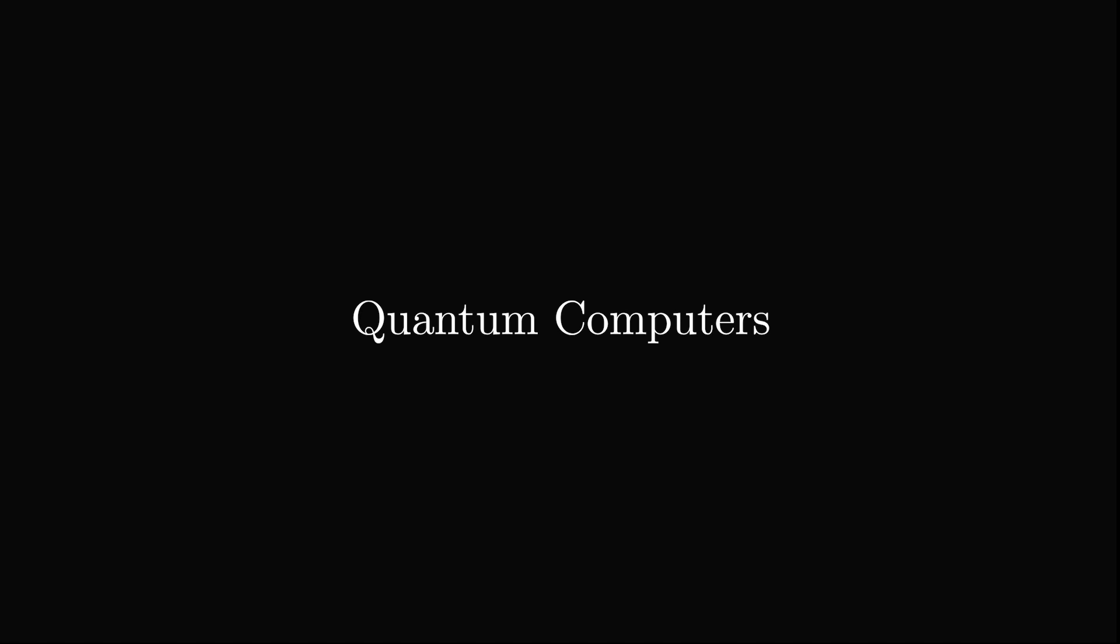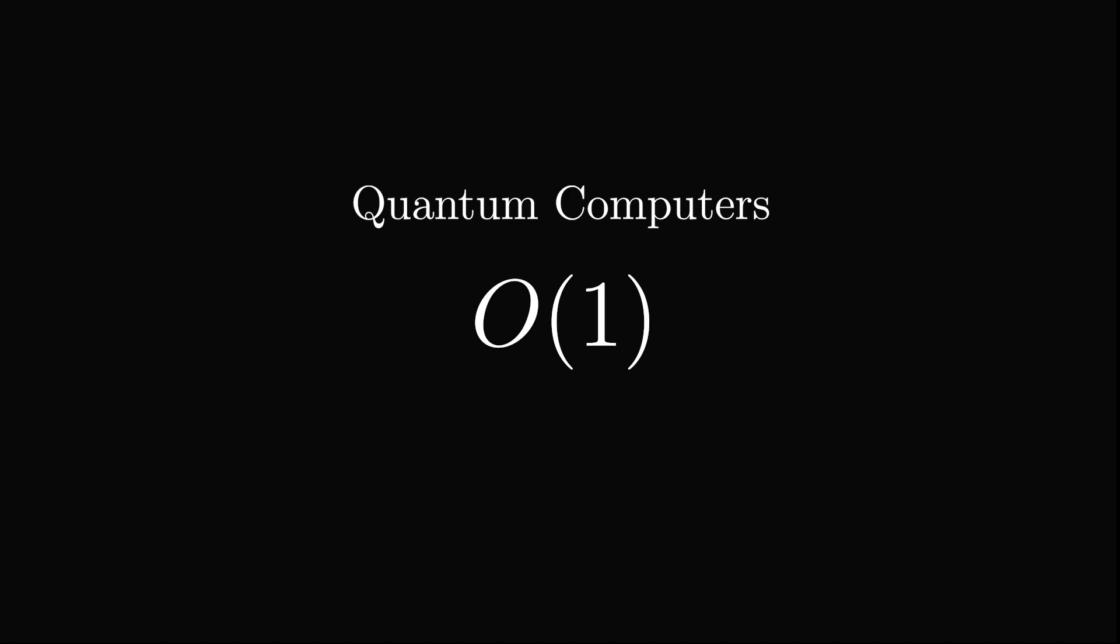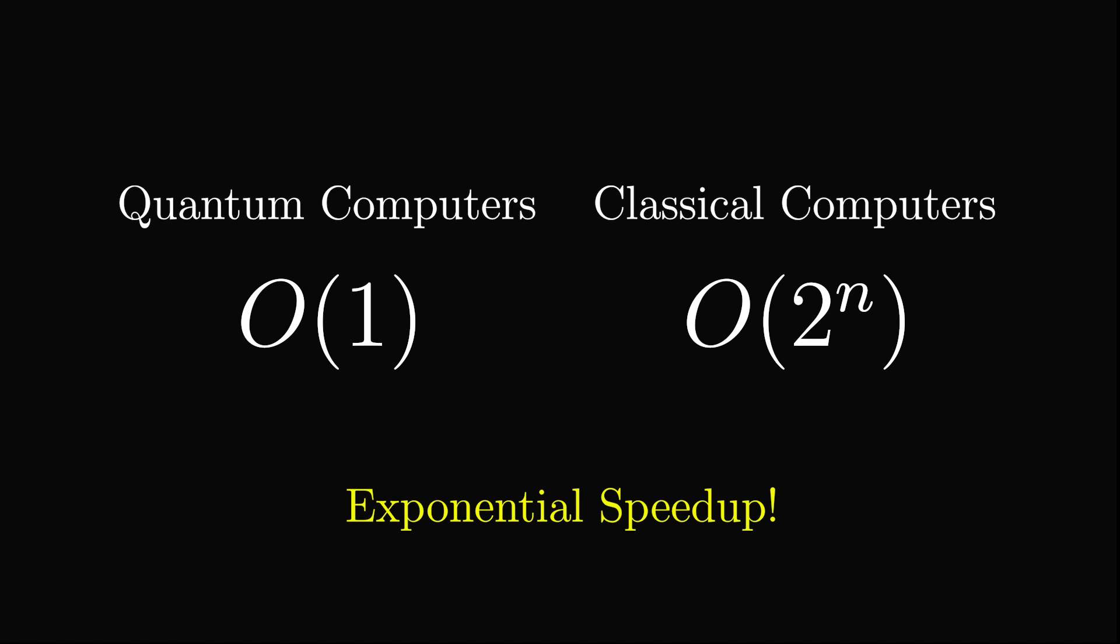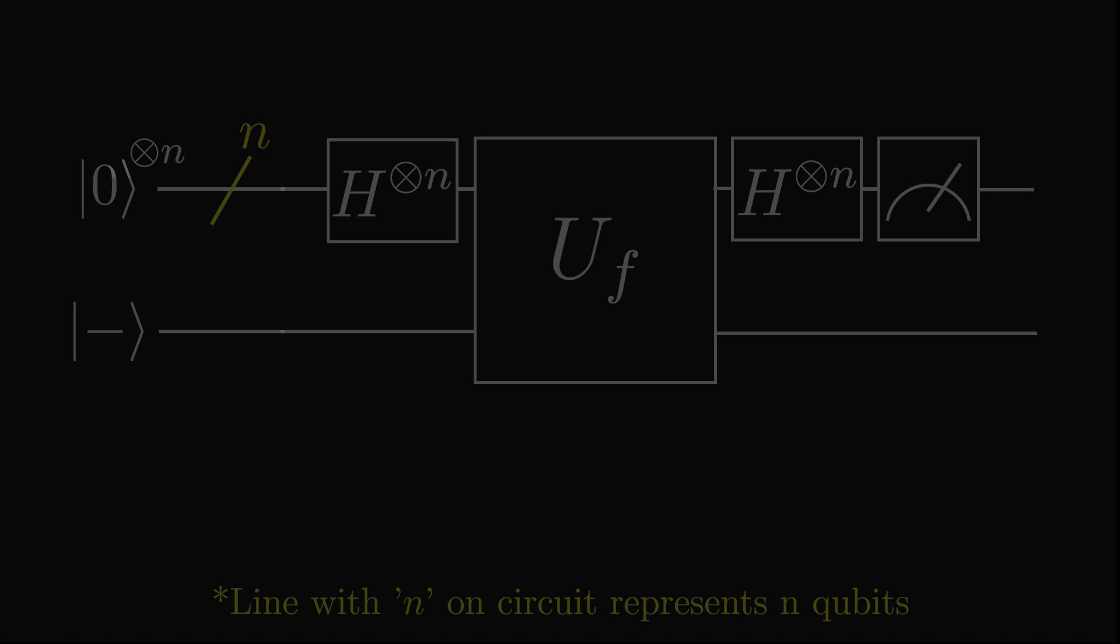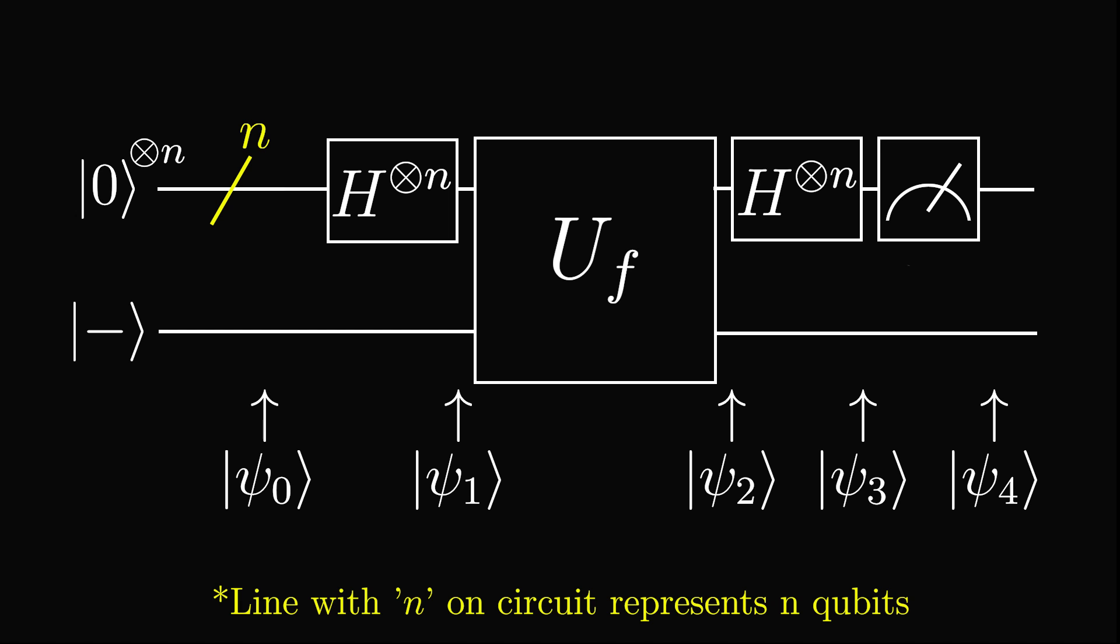With quantum computers, however, we only need one query of the function to find out if it's constant or balanced, giving us exponential speedup. Here is a circuit for the algorithm. Let's label different parts of the algorithm with psi so we can keep track of where we are in the circuit.